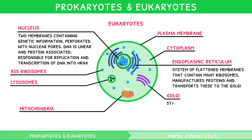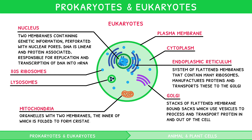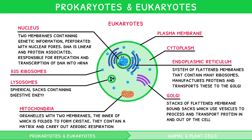The Golgi are stacks of flattened membrane-bound sacs called cisternae, which use vesicles to process and transport proteins in and out of the cell. Mitochondria are organelles with two membranes, the inner of which is folded to form cristae. They contain a matrix, like their own cytoplasm, and carry out aerobic respiration. Lysosomes are spherical sacs containing digestive enzymes, responsible for breaking down substances. Like the plasma membrane and cytoplasm, ribosomes are also identical in function as in a prokaryote. However, note they are larger in eukaryotes, of size 80S.